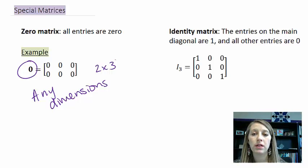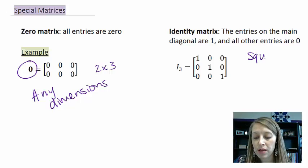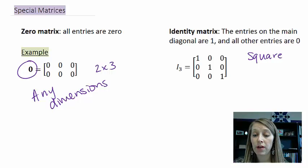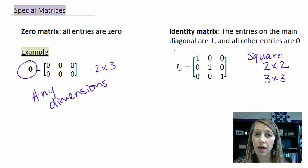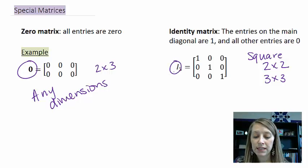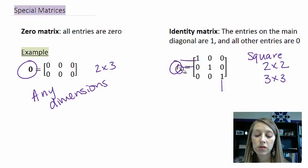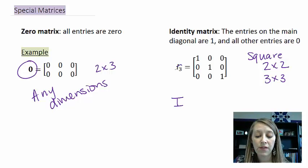The identity matrix, which we learned about in the last section when we row reduced matrices, is a square matrix. It can be any square dimension — we mostly deal with two by two and three by three in this class. It has zeros everywhere except for the main diagonal (top left to bottom right), which must be ones. It is called I for identity; this one is sub-three because it is three by three. Sometimes it's just written as I when the dimensions don't matter.